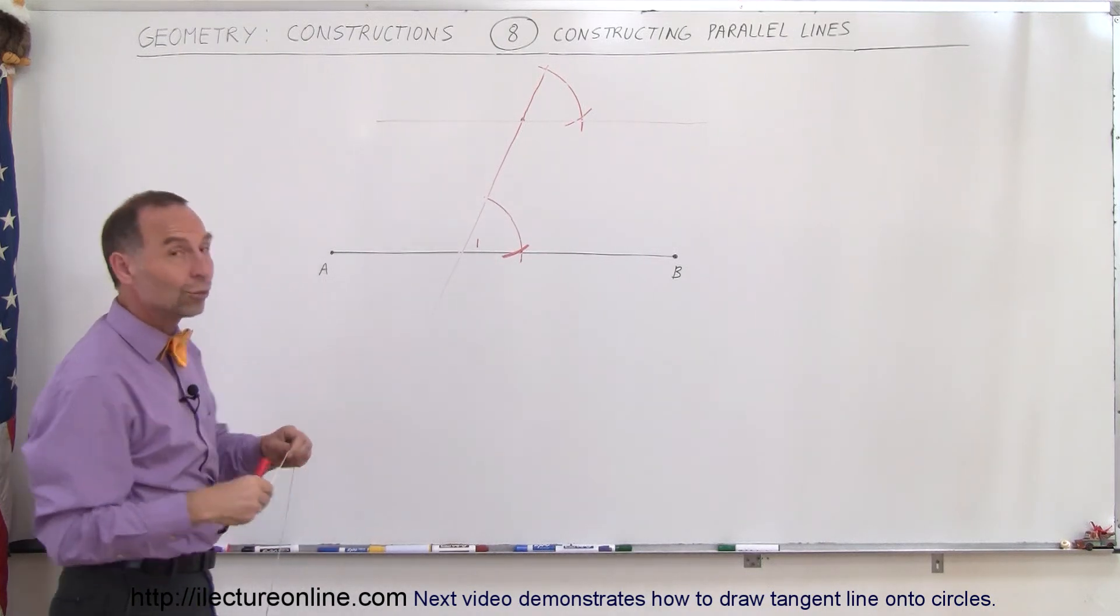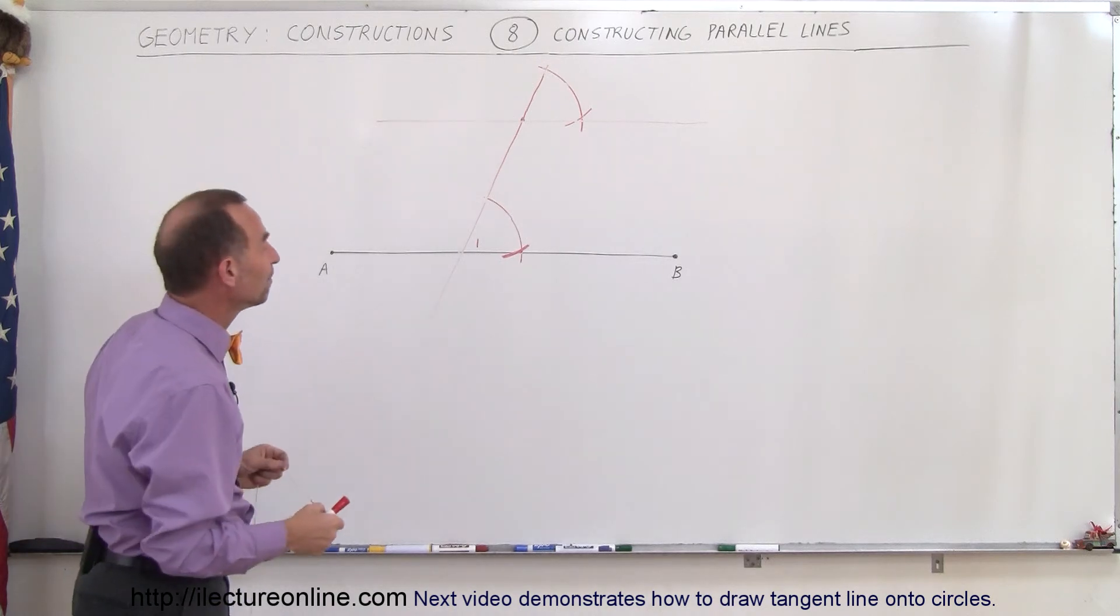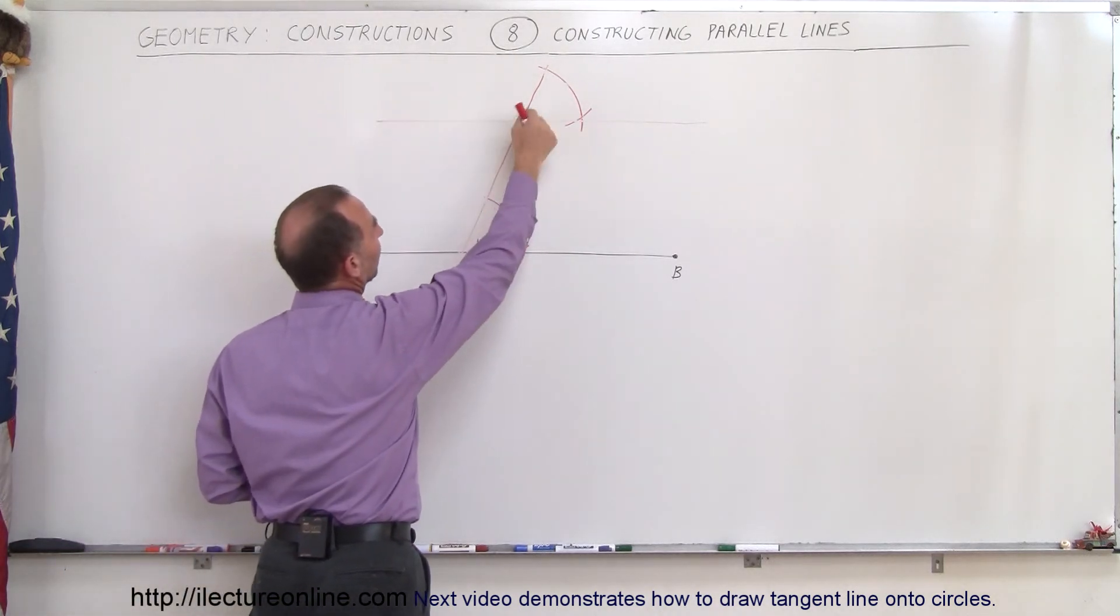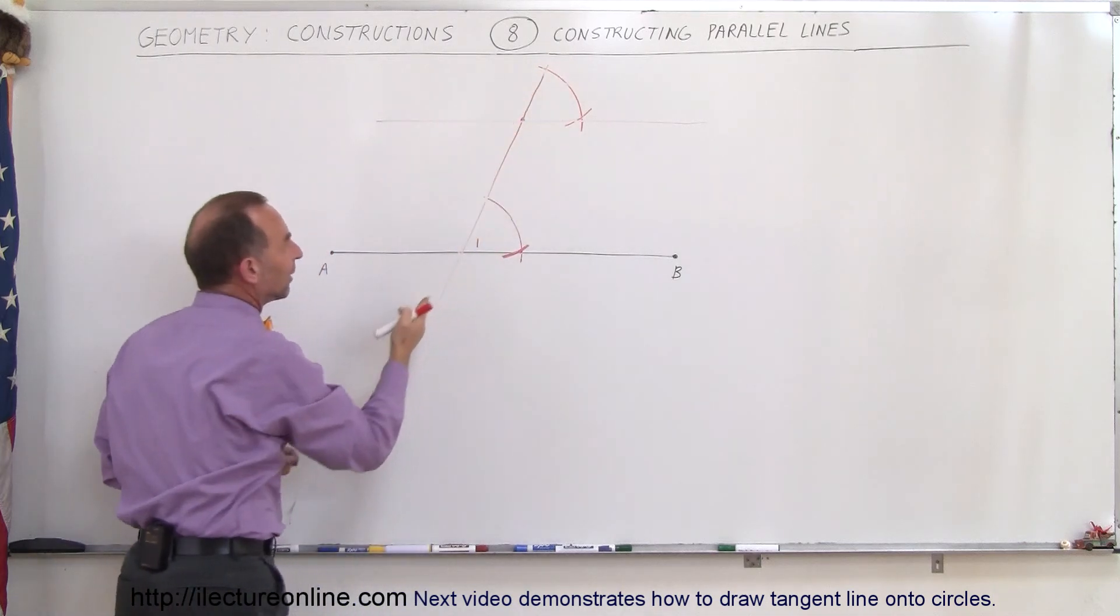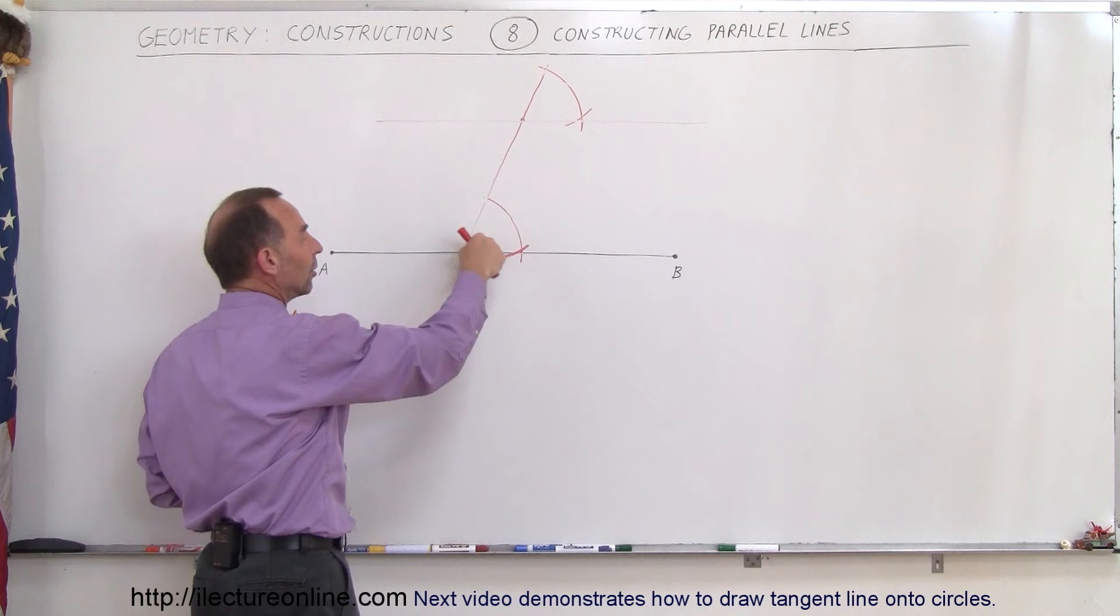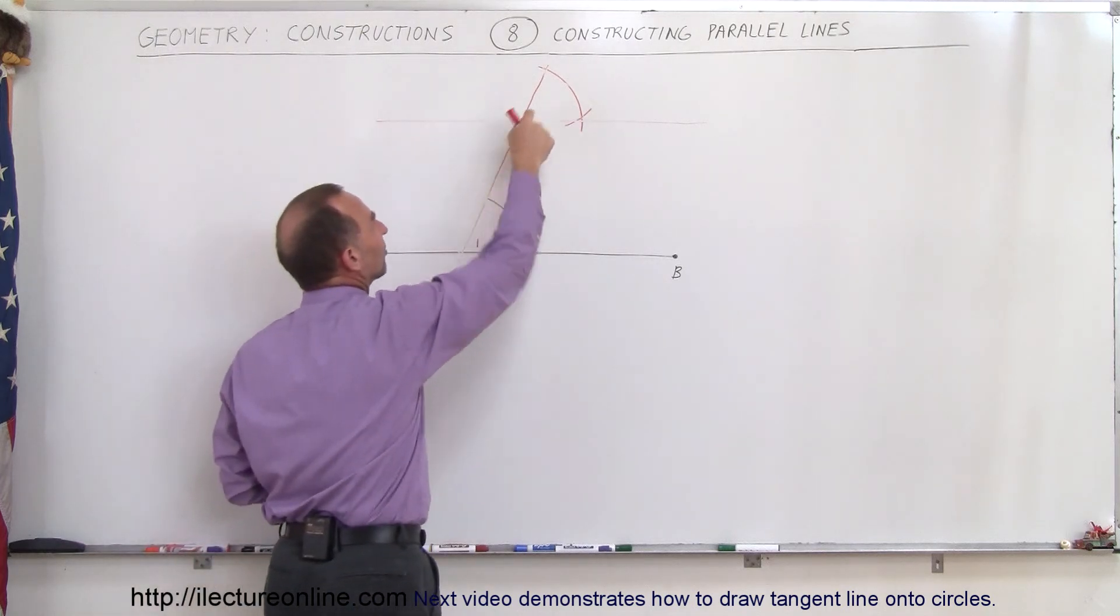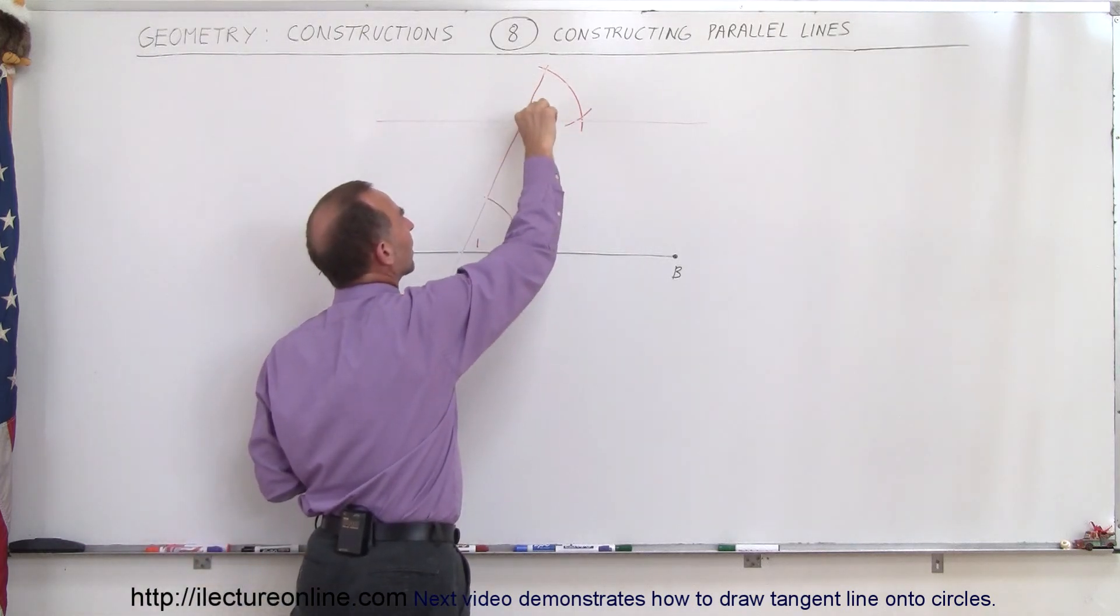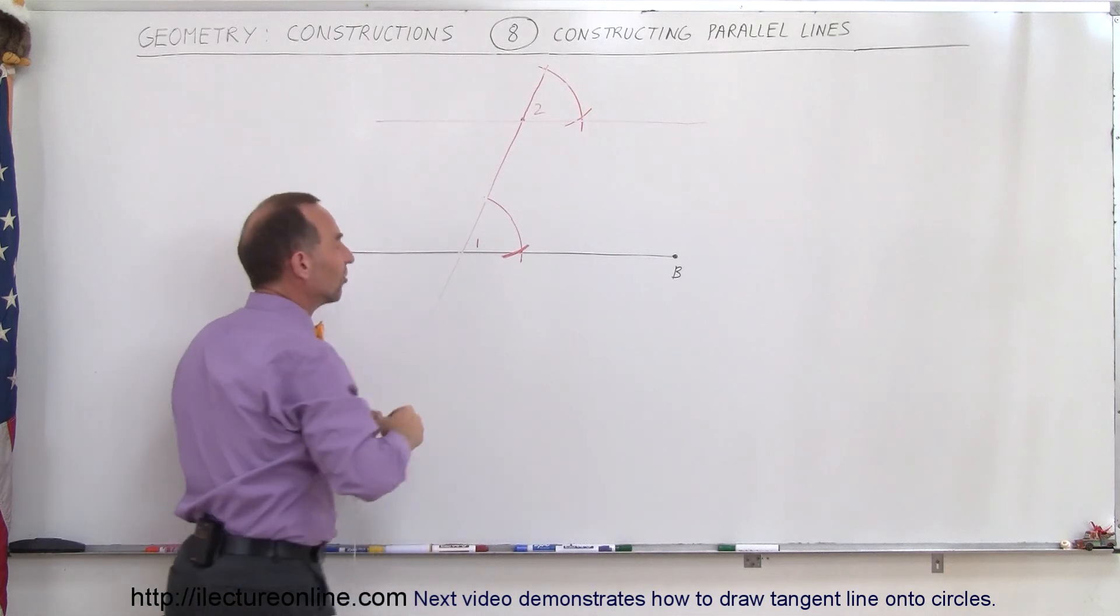Alright, so again, to review what we just did. We know we have to draw a parallel line to this point right there. So we draw a line from this point to this point. Again, it doesn't matter what the angle of that line is. But we do see that we make angle 1 here, which should then be the same as angle 2 over there. How do we make the two angles the same?